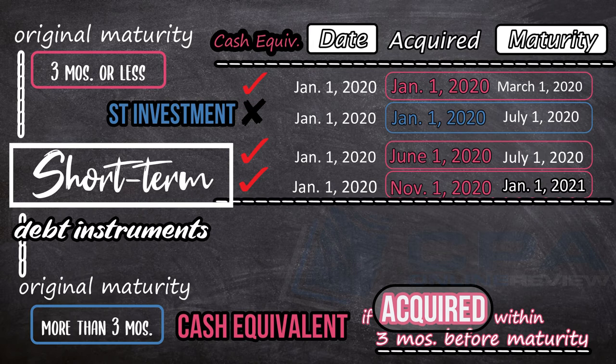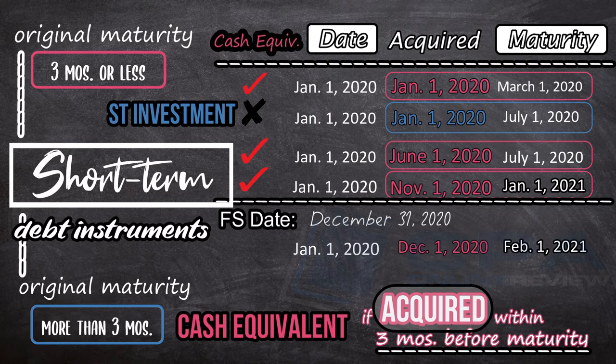For the next cases, say we have a financial statement date of December 31, 2020, or end of the year. Case 1: it is a cash equivalent, since it is acquired 2 months from maturity — from December 1, 2020 to February 1, 2021.